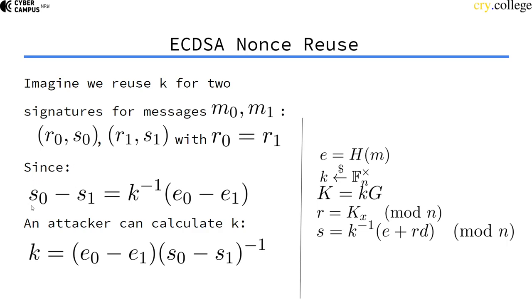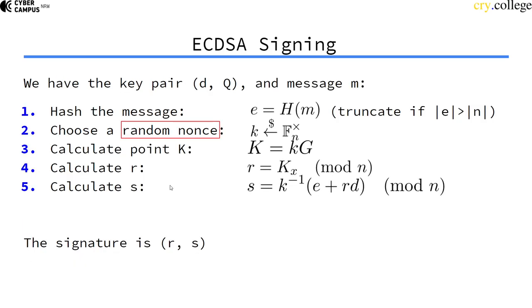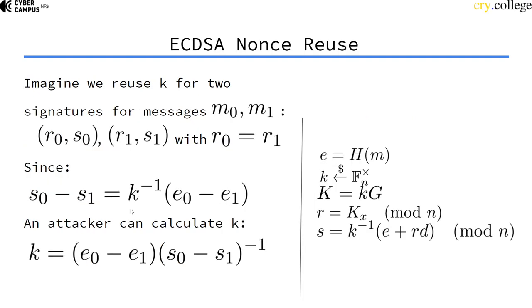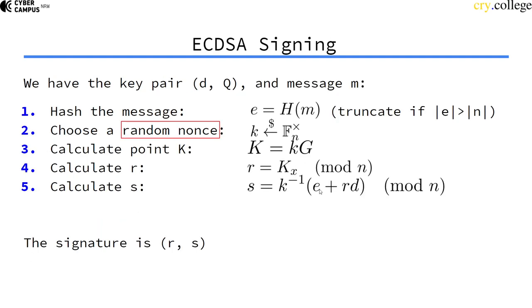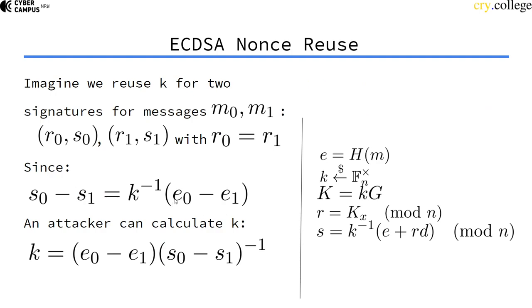So, if we subtract S1 from S0, we actually get, you can see here, we subtract them, K is equivalent, and get the inverse of K. These cancel out here because they're identical, the inverse of K times E0 minus E1.